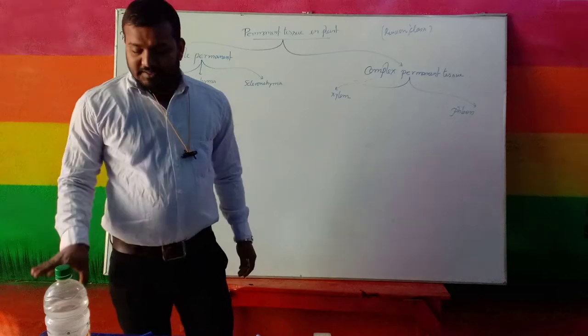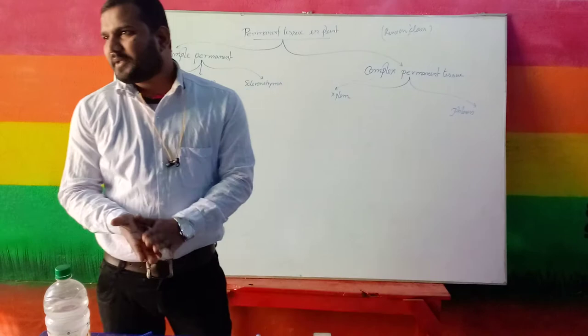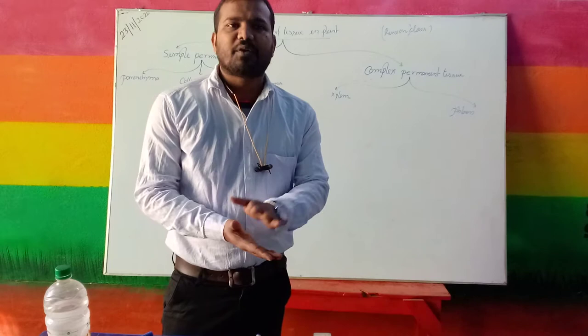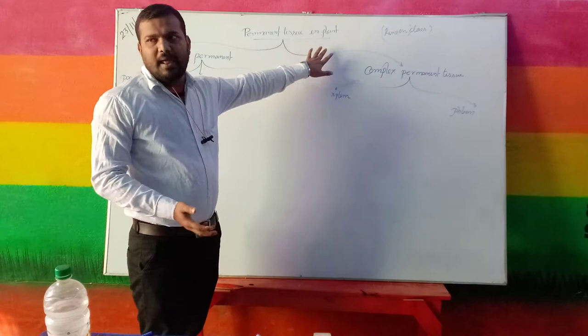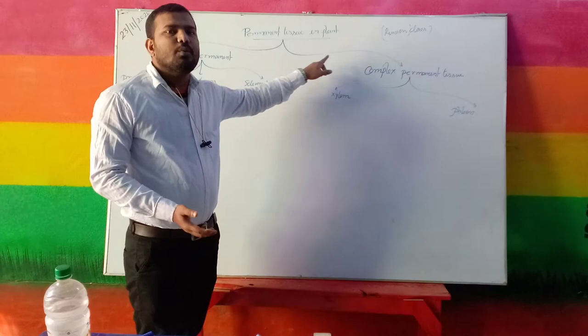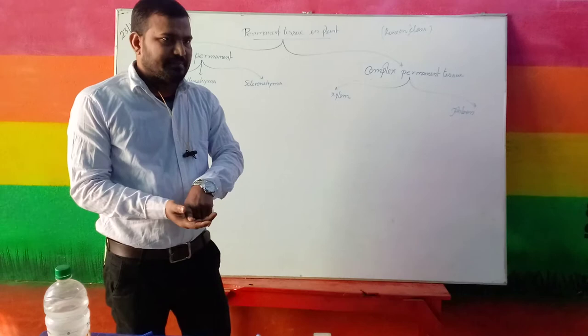Already we discussed about the meristematic tissue. Meristematic tissue implants means those tissues having the totipotency or able to perform cell division. On the other hand, we have the permanent tissue. Permanent tissue contains those types of cells which are not able to perform cell division.